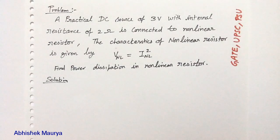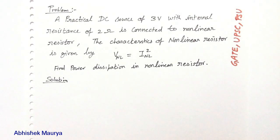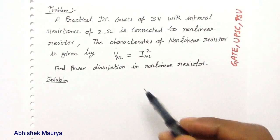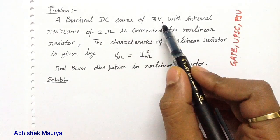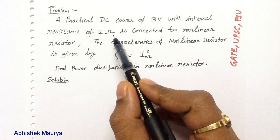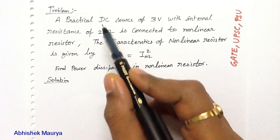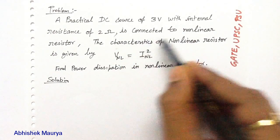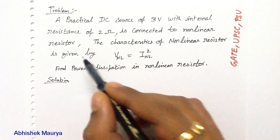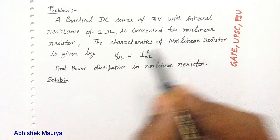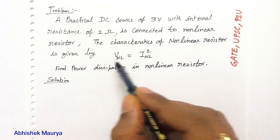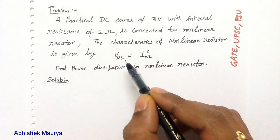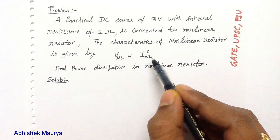This question is generally asked as an objective question in examinations. In this question, there is a practical DC source of 3 volt with internal resistance of 2 ohm, and this DC source is connected to a non-linear resistor. The characteristics of the non-linear resistor is given by V_NL equals I_NL squared.